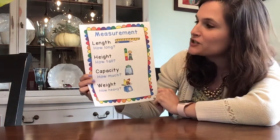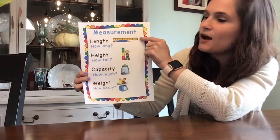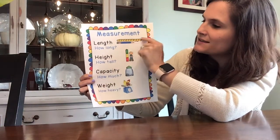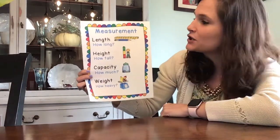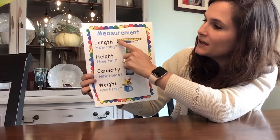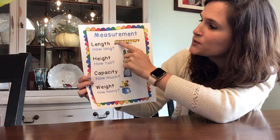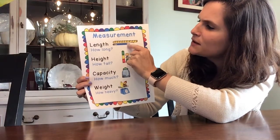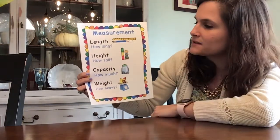When you're measuring something, you can measure the length — that's how long something is. Here they're using non-standard measurement, so they're not using a ruler or a tape measure. They're using blocks to show how long the pencil is, and you can count how many blocks long it is. This pencil is about seven blocks long.